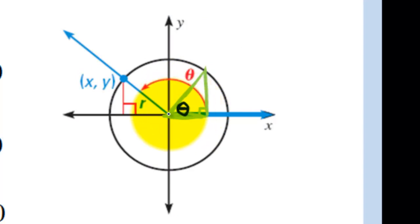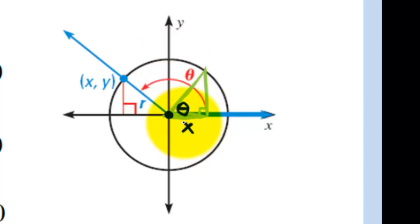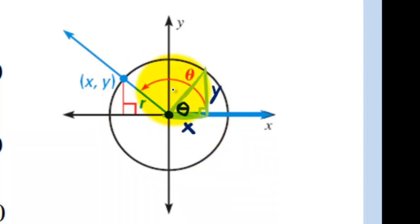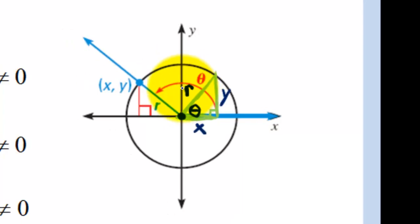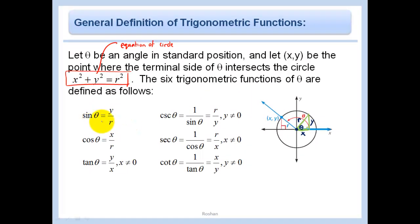Your theta in any triangle that you put here is always going to be coming from the origin. Since we're on the xy-plane, this length here is just x, and this length here is just y. And since we're on the circle with a radius of r, this length right here is just our r. So what is sine of theta?